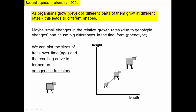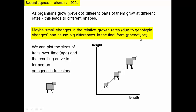As organisms grow and develop, different parts of them grow at different rates, and that tends to lead to different shapes of organisms. The idea here is that maybe small changes in relative growth rates, because of some sort of genetic change, can cause big differences in the final form — the phenotype.